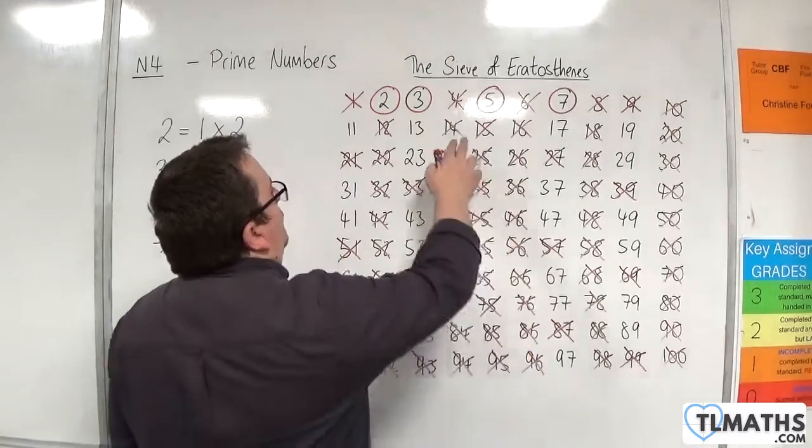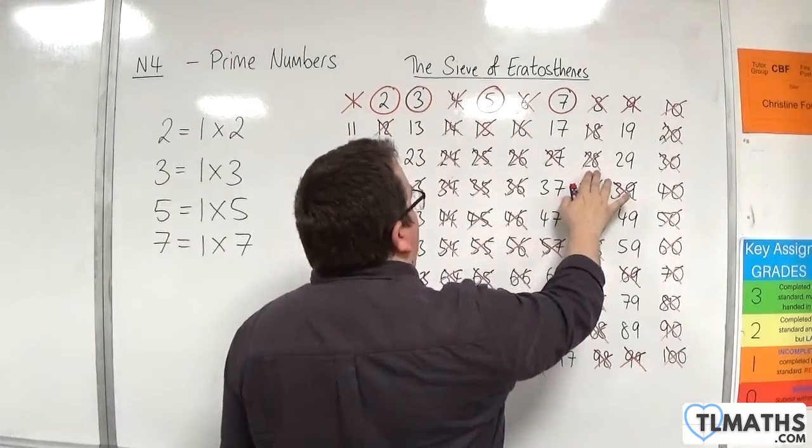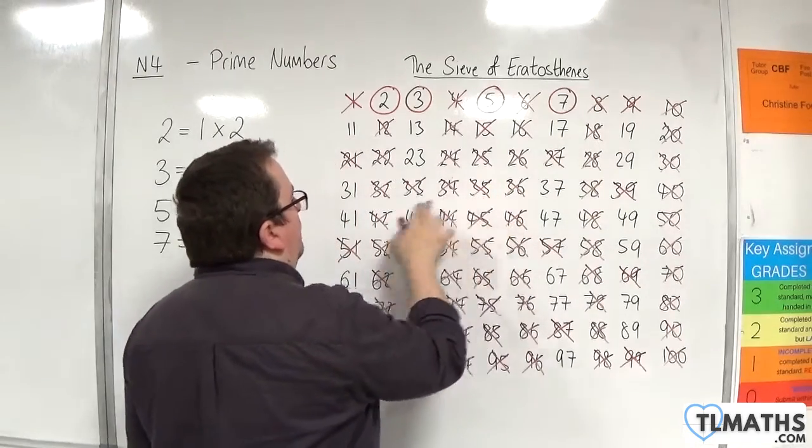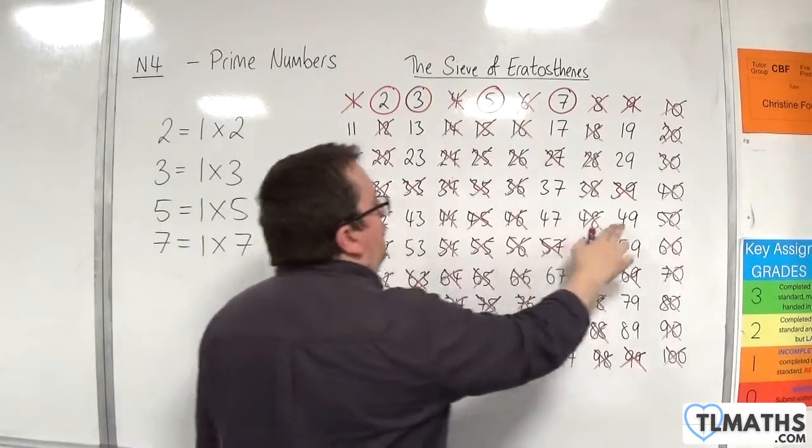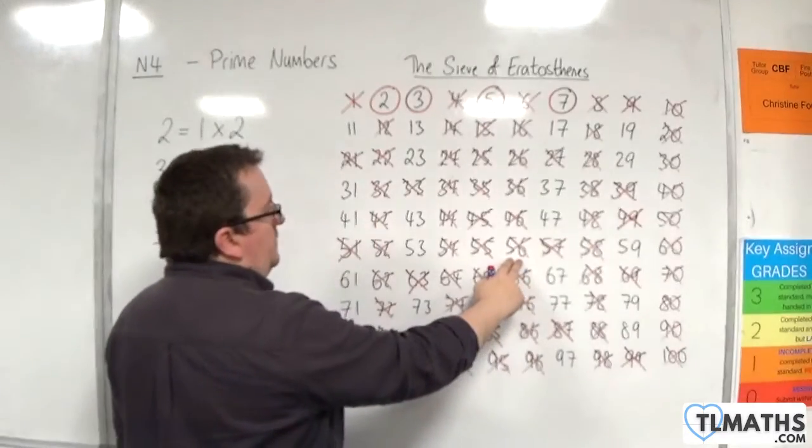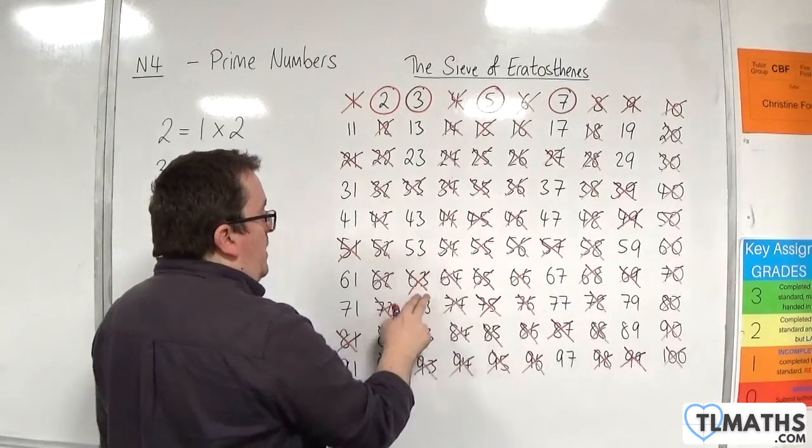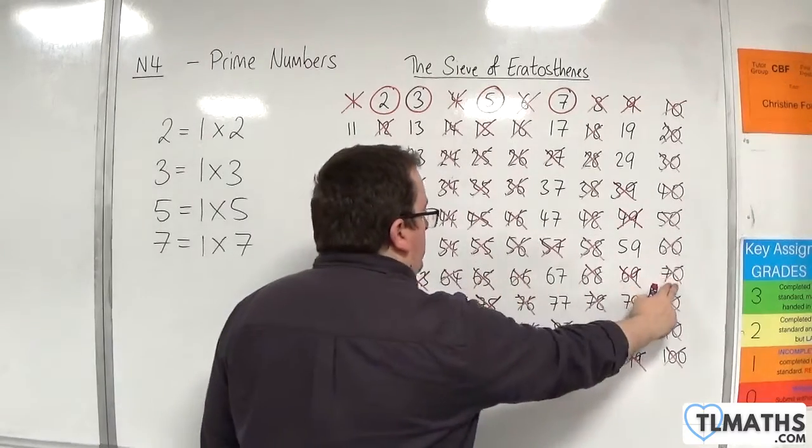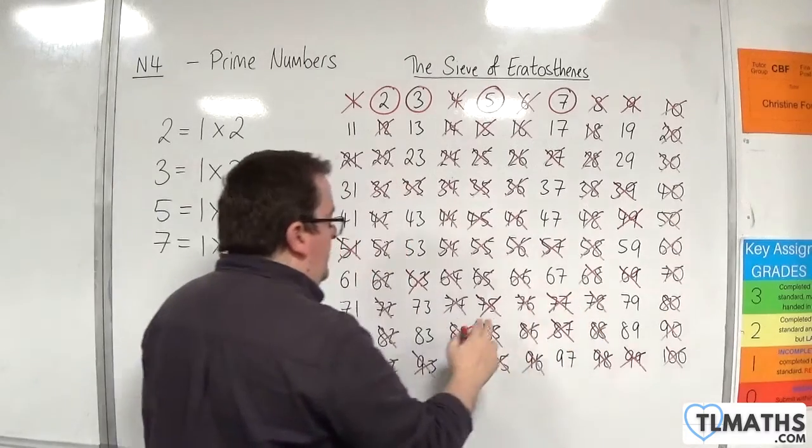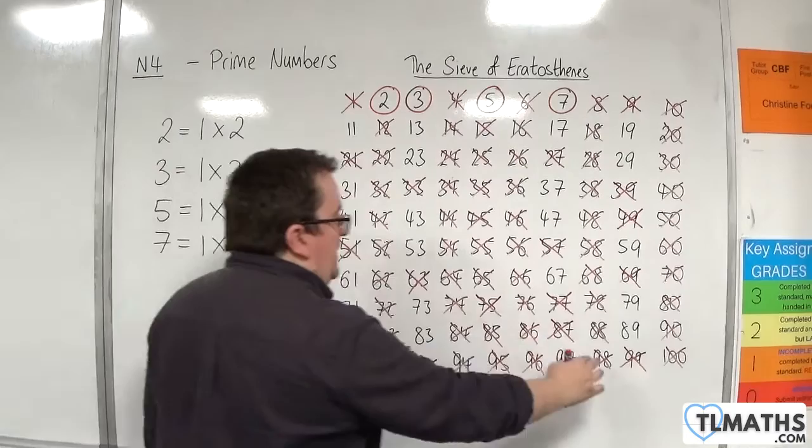But all multiples of seven from then on must therefore not be prime. So that would be seven, fourteen, twenty-one, twenty-eight, thirty-five, forty-two, forty-nine, fifty-six, sixty-three, seventy, seventy-seven, eighty-four, ninety-one, ninety-eight.